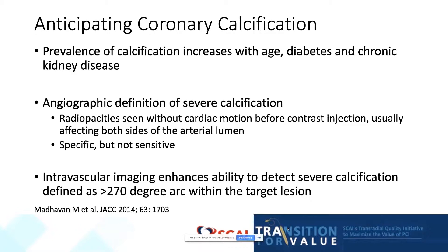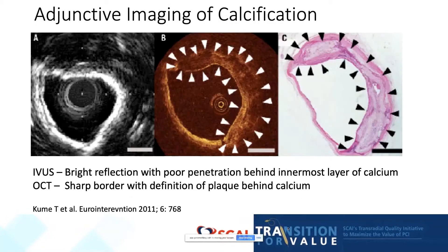In fact, in intravascular studies comparing angiograms to an intravascular definition of severe calcification, the presence of calcification appears to be more prevalent, with severe calcification on intravascular imaging being defined as an arc greater than 270 degrees. Adjunctive imaging is very helpful in management: IVUS shows a very bright border with poor penetration behind the innermost layer of calcium, and OCT shows a more subtle but sharp border with good definition of the plaque behind the calcified area. A slide from Eurointervention shows a nice comparison of IVUS, OCT, and histology all in the same area of the lesion, describing differences in imaging quality between these modalities.